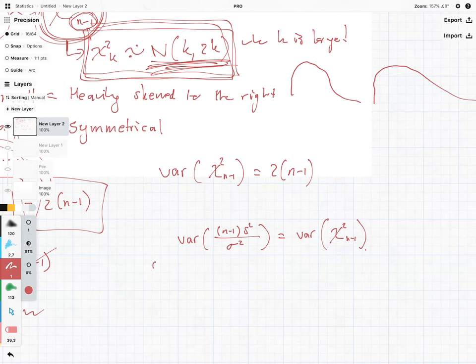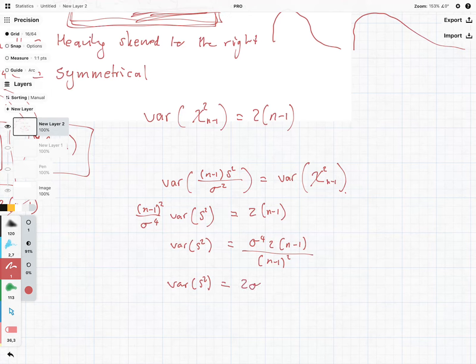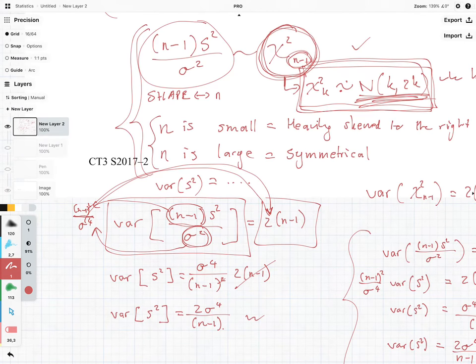Then the whole idea here was to take n minus 1 squared equals 2n minus 1. And then we have variance s-squared equals sigma to the fourth times 2n minus 1 divided by n minus 1 squared, which means variance s-squared equals 2 sigma to the fourth divided by n minus 1. So just a neater way of writing it out.